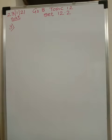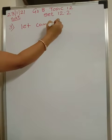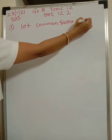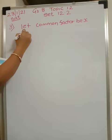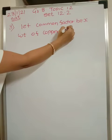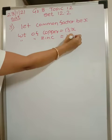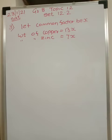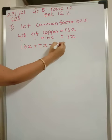When a ratio is given, we have to consider some common factor. So we will let the common factor be x. Weight of copper is 13x and weight of zinc will be equal to 7x. We have to find the weight of zinc in a brass utensil weighing 700 grams, so together 13x plus 7x will be equal to 700.